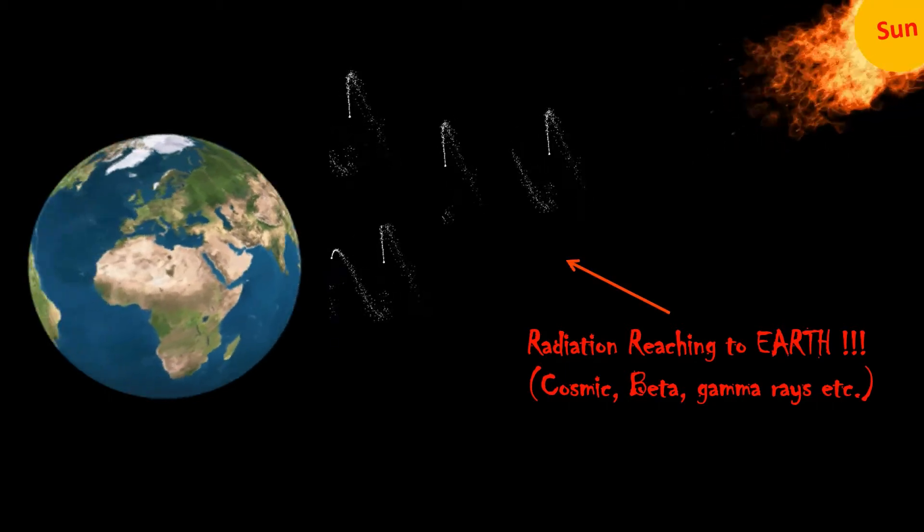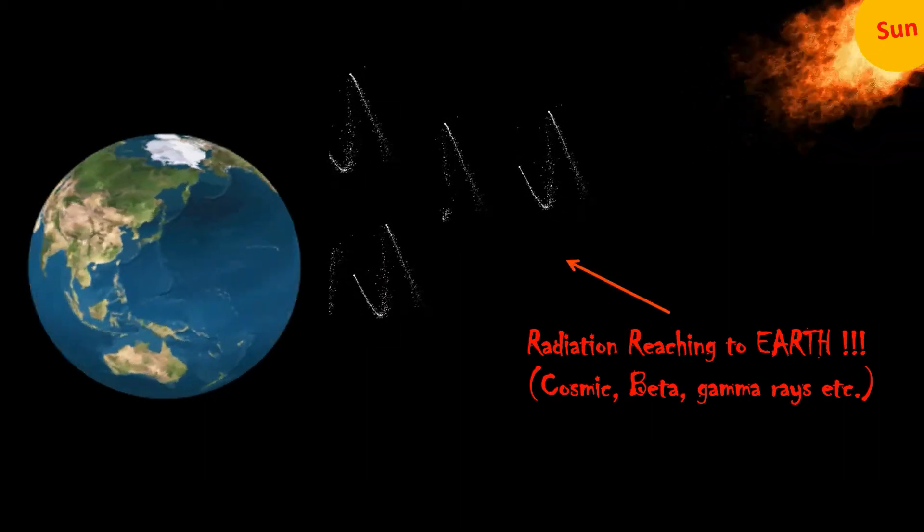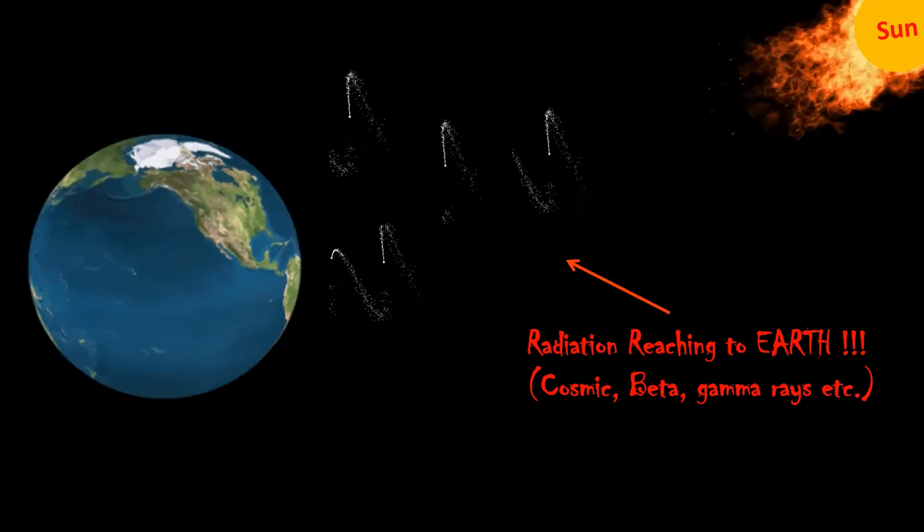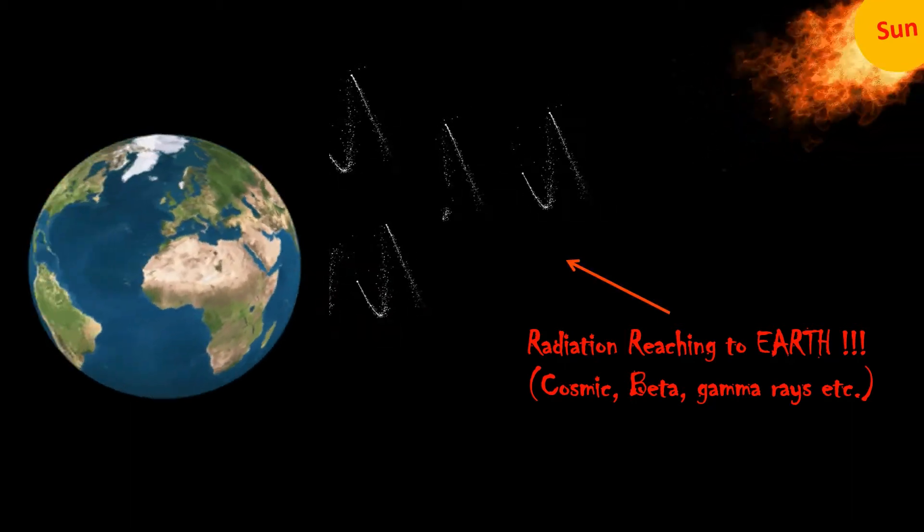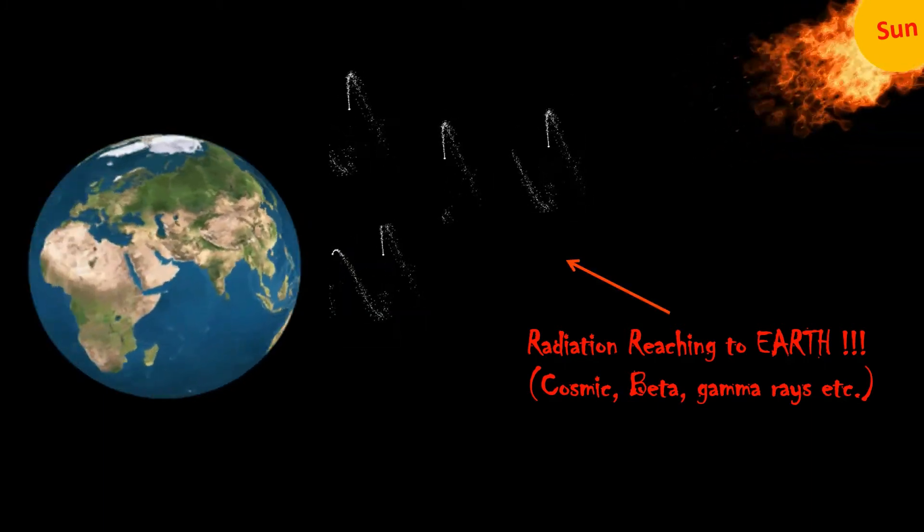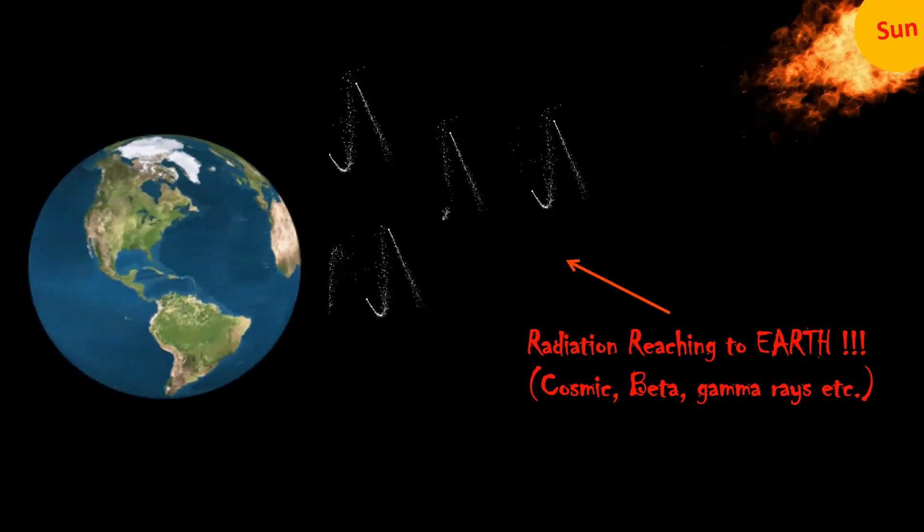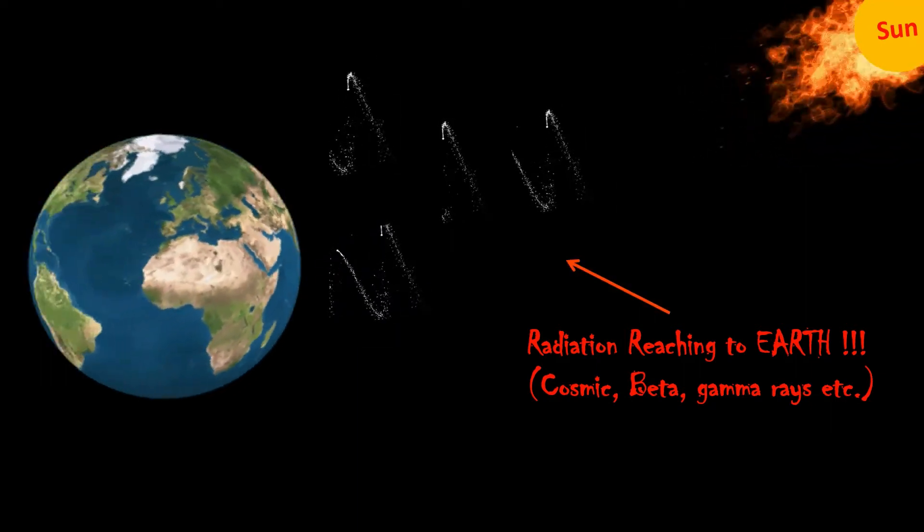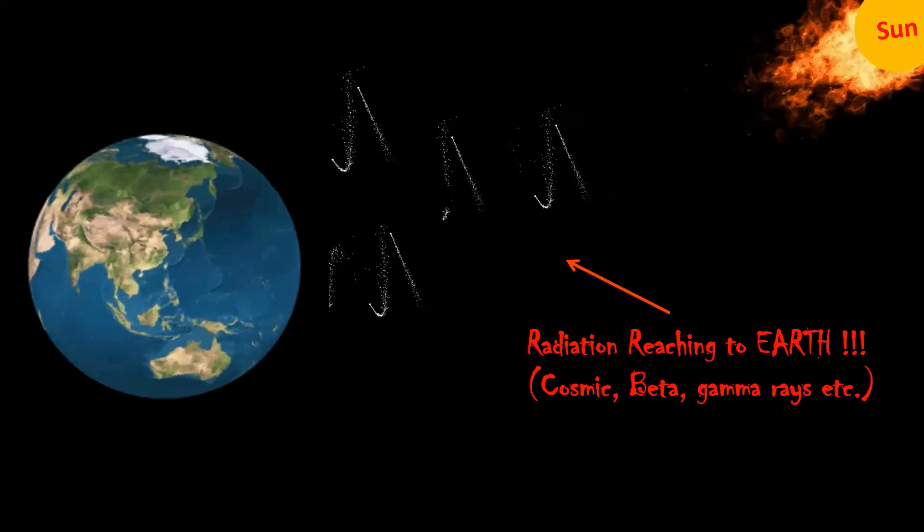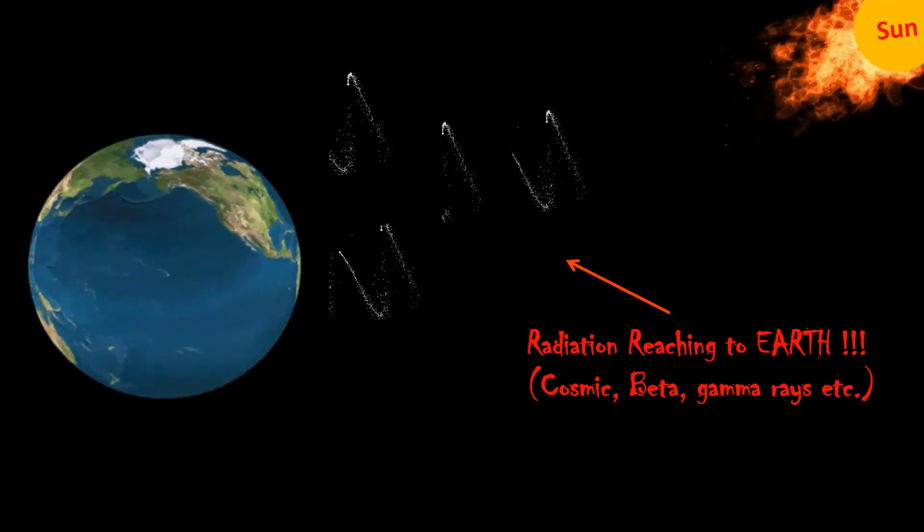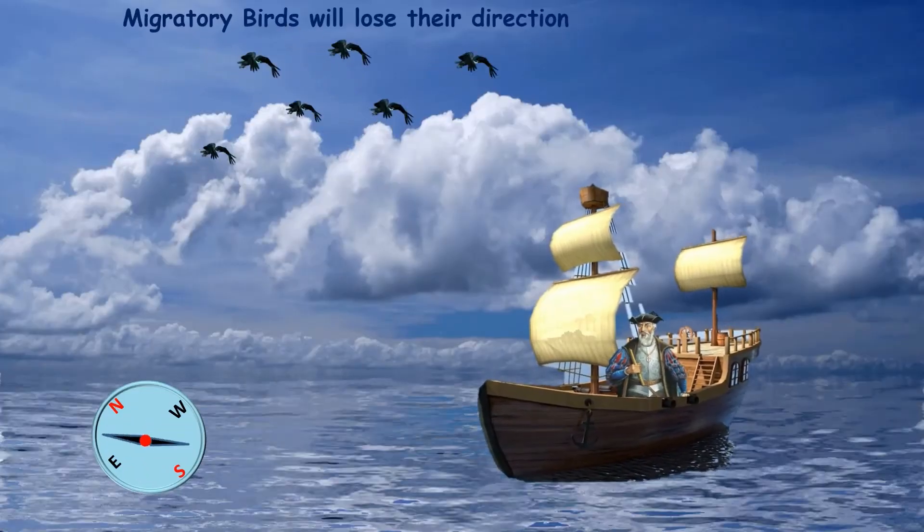Have you ever thought about what would happen on Earth if this magnetosphere disappeared? Cosmic rays and the solar winds are harmful to life on Earth, and without the protection of our magnetosphere, our planet will be constantly bombarded by a stream of extremely energetic particles. Cosmic rays will bombard our bodies and can even damage our DNA, increasing the worldwide risk of cancer and other illness. This is just one of several consequences if Earth's magnetic field disappears.